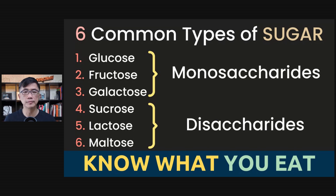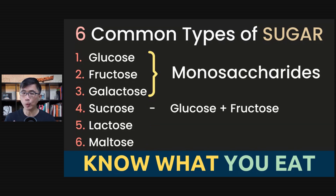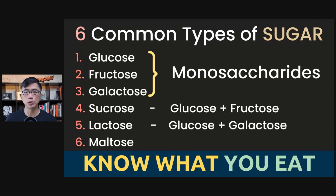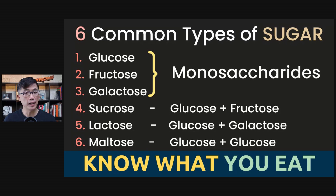Sucrose is made up of one molecule of glucose linked to a molecule of fructose. Lactose is made up of one molecule of glucose linked to a molecule of galactose. And maltose is made up of one molecule of glucose linked to another molecule of glucose.